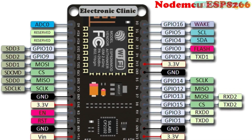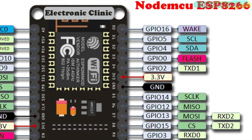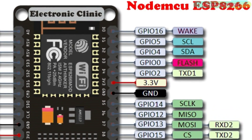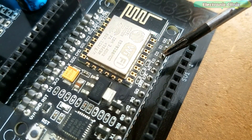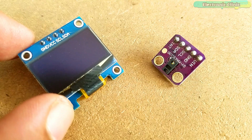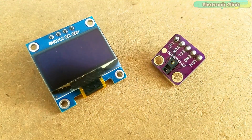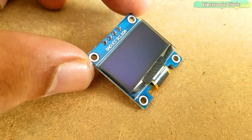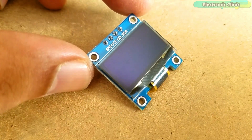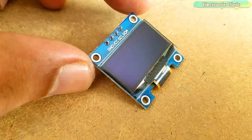If you look at the pinout of the NodeMCU ESP8266, you will find D1 is the SCL and D2 is the SDA. Using these two pins, multiple I2C supported devices can be connected with the NodeMCU ESP8266. In this project, we are using two I2C supported devices: the OLED display module and the MAX30100 pulse oximeter.